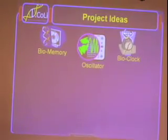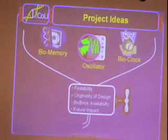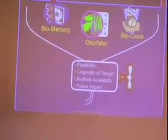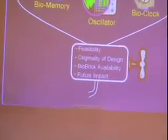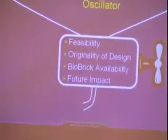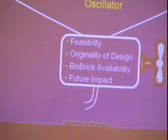We were excited about all three projects, but we really only had time to pursue one. So to help us decide, we came up with a series of four criteria. The project would have to be feasible, originally designed, have a good biobrick availability, and a good future impact. And of the three ideas, the oscillator being the clock.